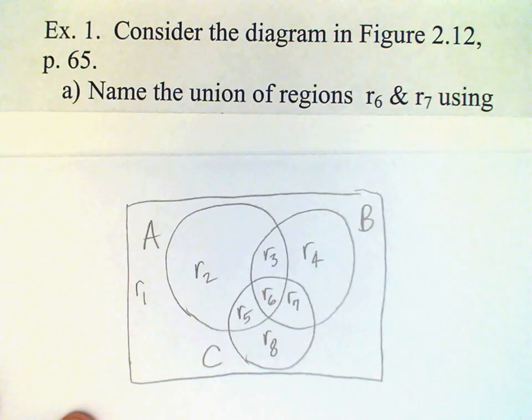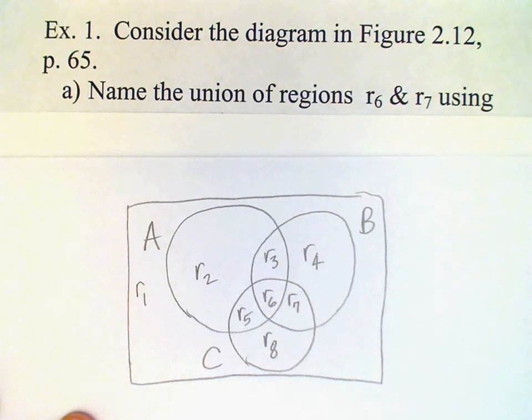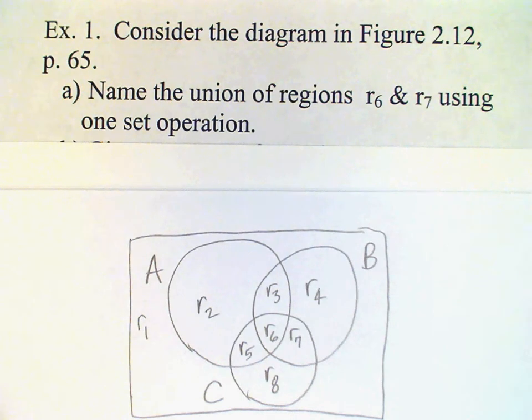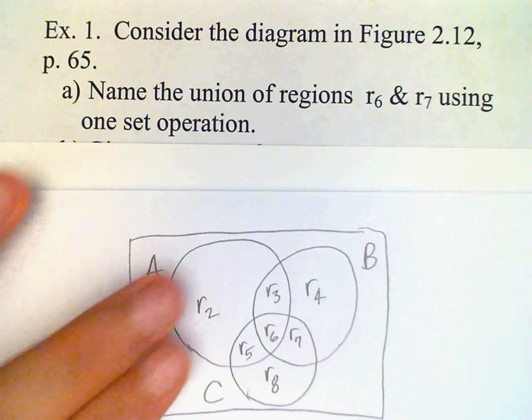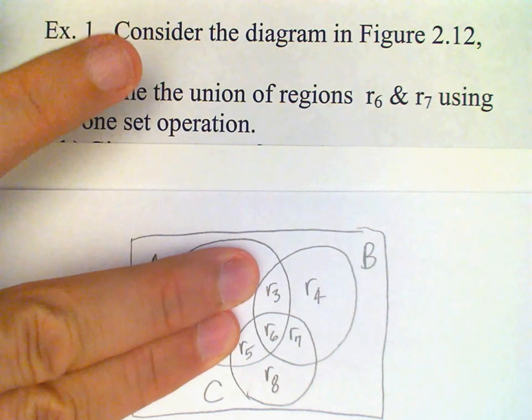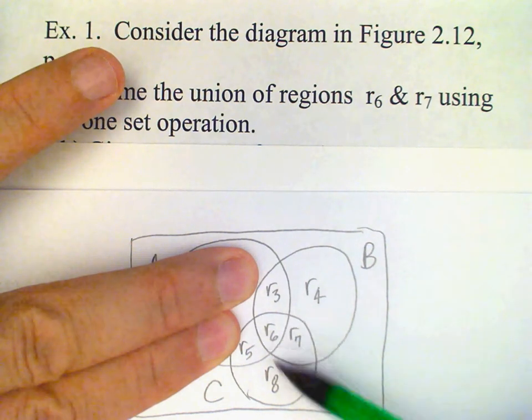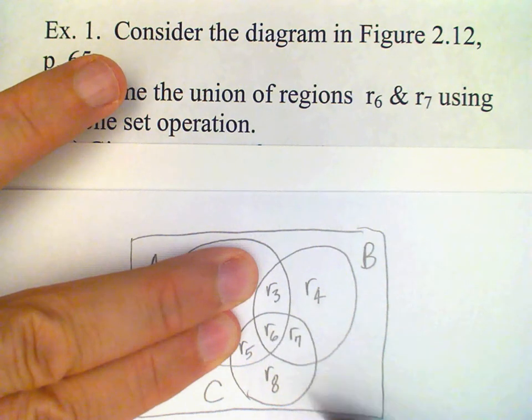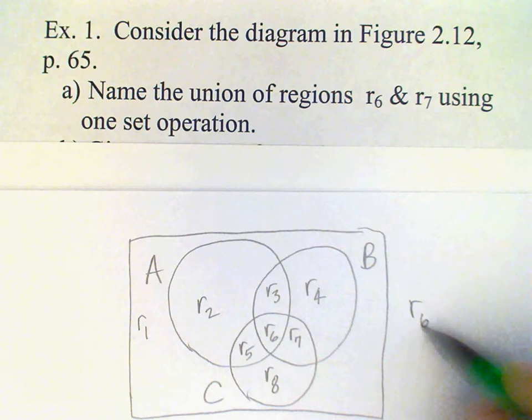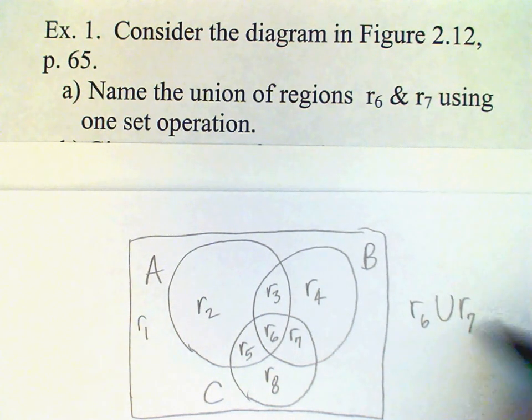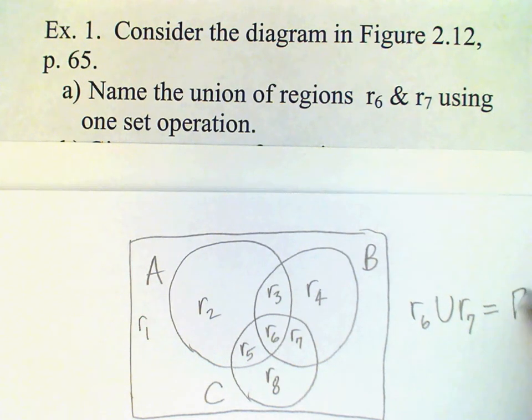And the question asks us to name the union of the regions R6 and R7 using one set operation. Probably the easiest way to think about this is just to put your finger over set A and just focus on sets B and C. We see that R6 and R7 taken together represent the intersection of sets B and C. So R6 union R7 represents the intersection of B and C.